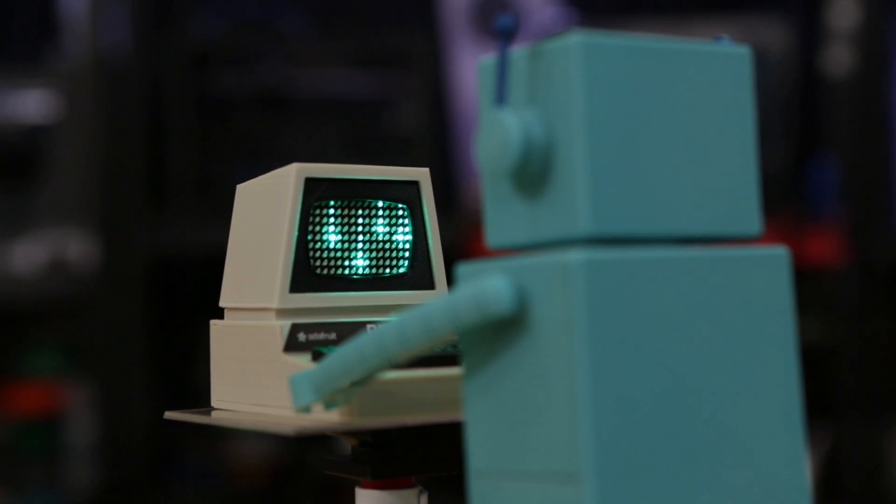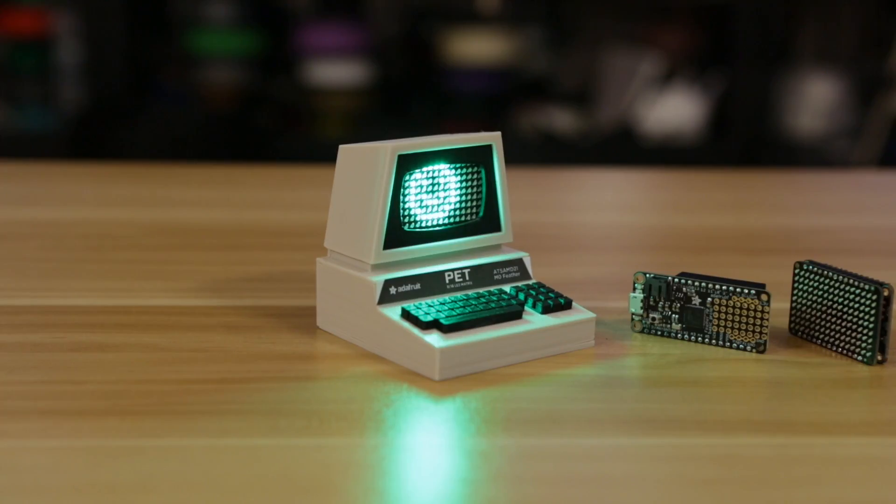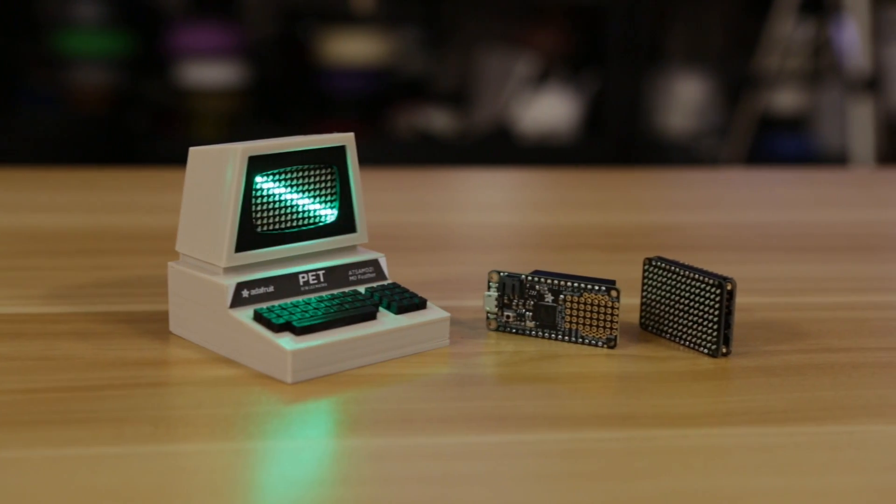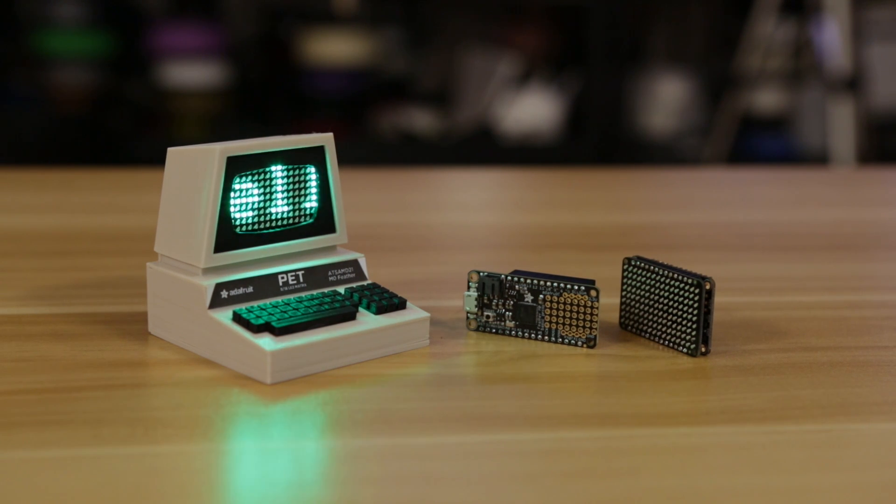In this project we'll show you how you can build a mini replica of an iconic computer from the 1970s. This project uses an Adafruit Feather M0 and LED matrix to make a retro inspired computer that resembles the Commodore PET. It's a neat little DIY project that's fun to build and makes a really cool gift.